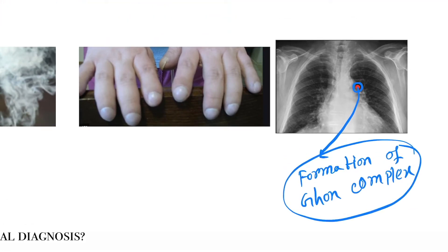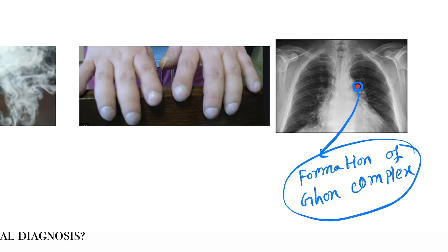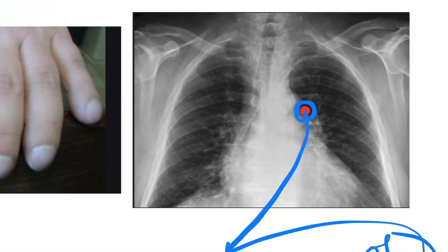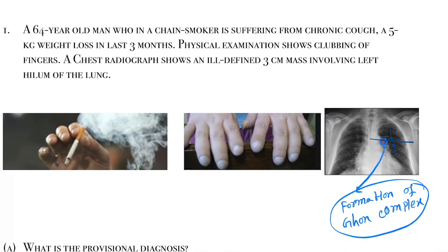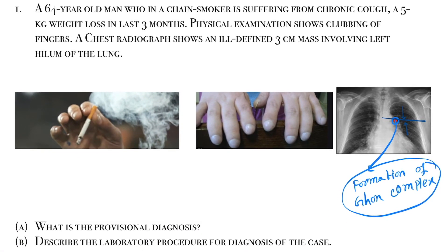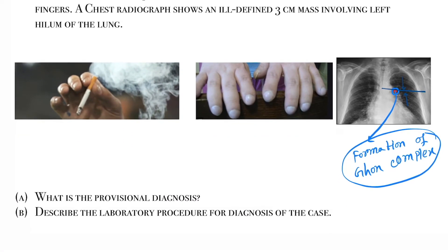As you know, in tuberculosis, the formation of the Ghon complex occurs. Here in the chest radiograph you can see the formation of the Ghon complex. It usually forms at the lower part of the upper lobe and the upper part of the lower lobe — that is the highlighted area. From this, you can see that the provisional diagnosis is tuberculosis.